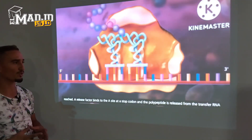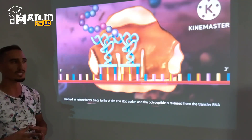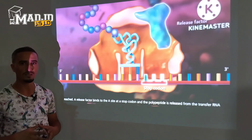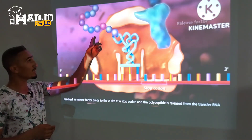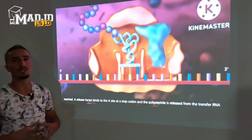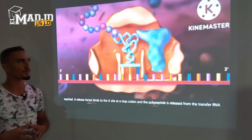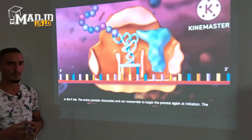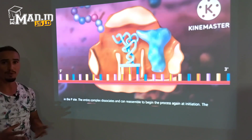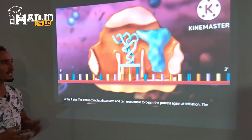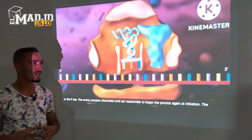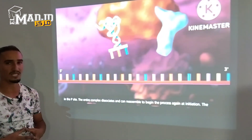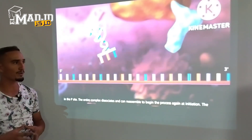A release factor binds to the A site at the stop codon, and the polypeptide is released from the transfer RNA molecule at the P site. The entire complex dissociates and can reassemble to begin the process again at initiation.